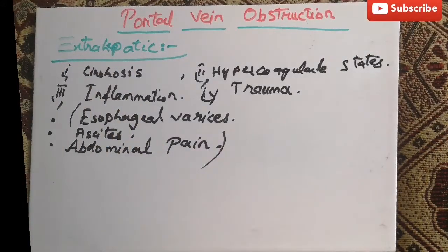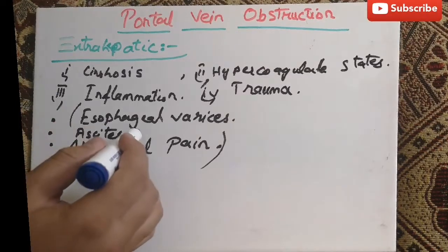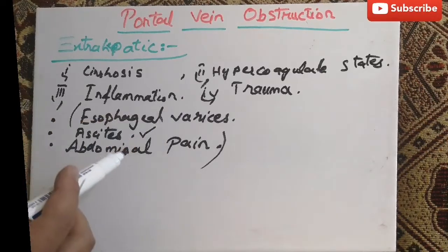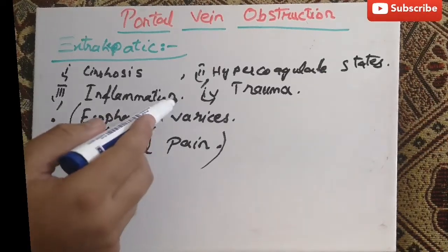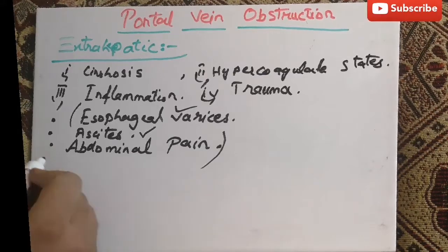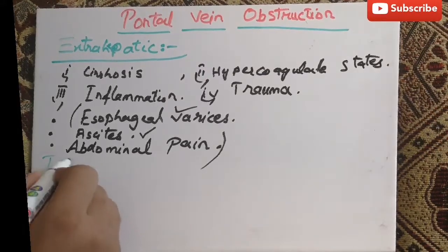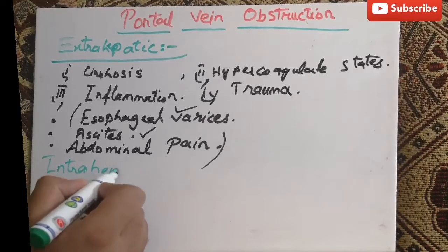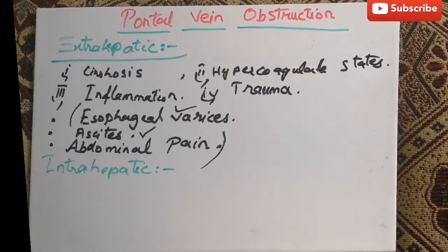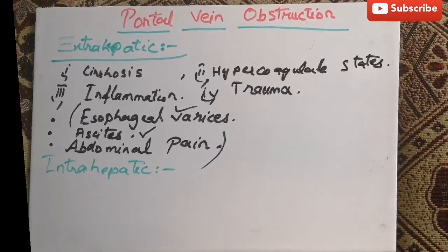Ascites is not as common compared to esophageal varices and abdominal pain. Furthermore, esophageal varices can also rupture. The next topic is intrahepatic portal vein obstruction.